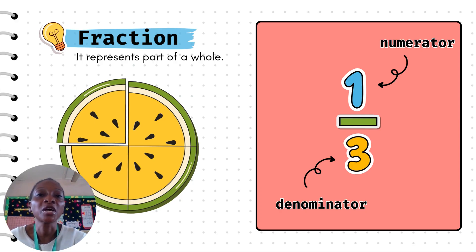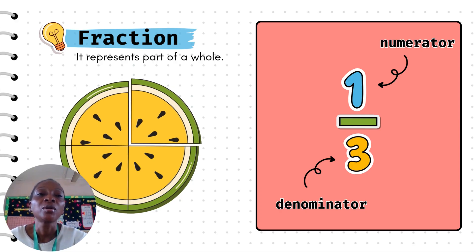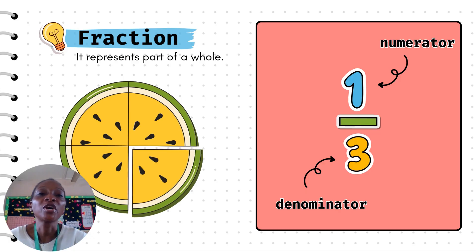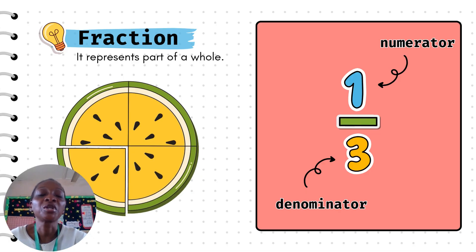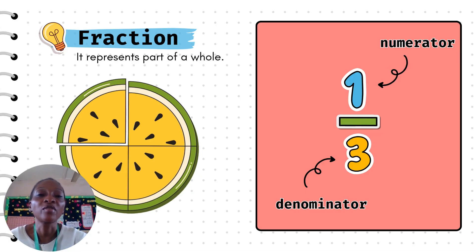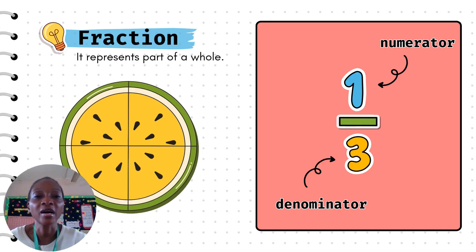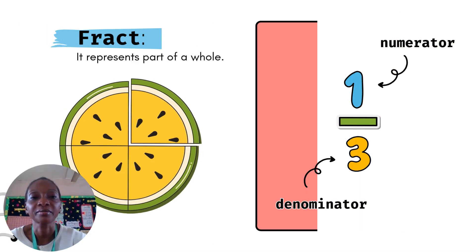Now let's look at the fraction here. We have 1 over 3. Our numerator is 1, our denominator is 3. So 1 over 3 is a fraction.